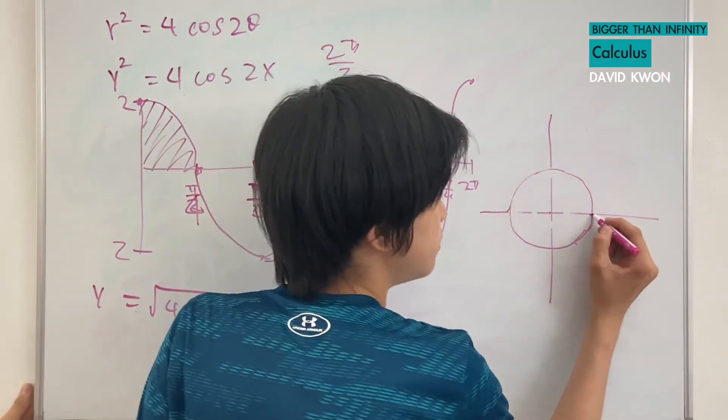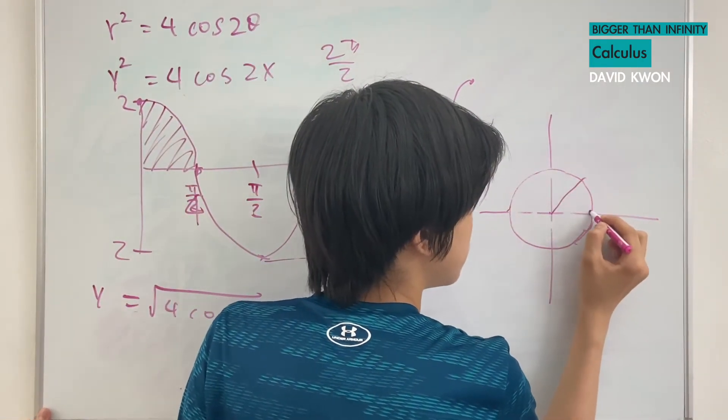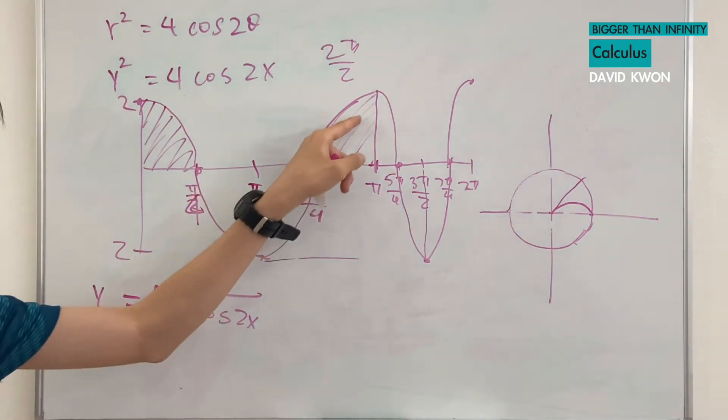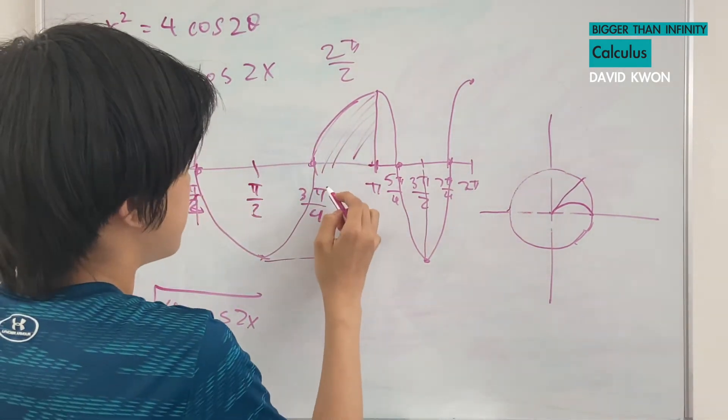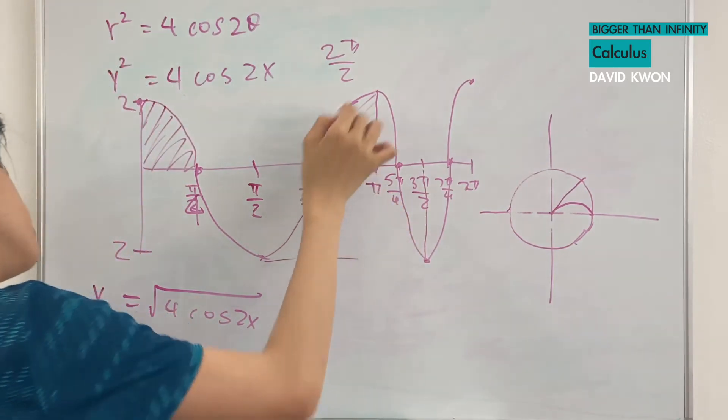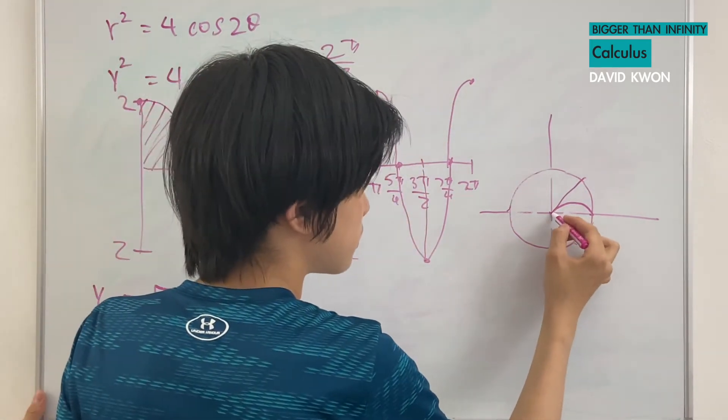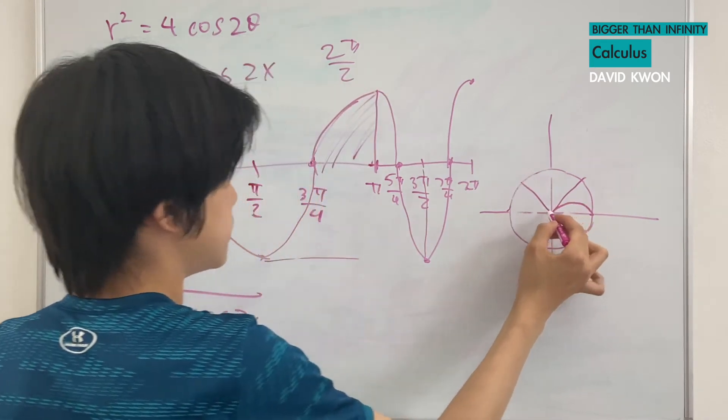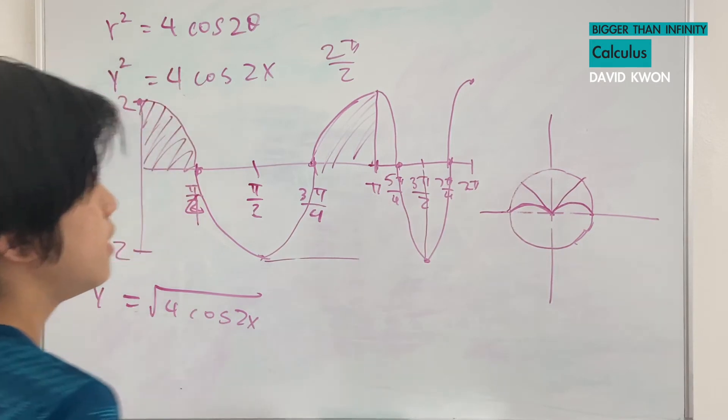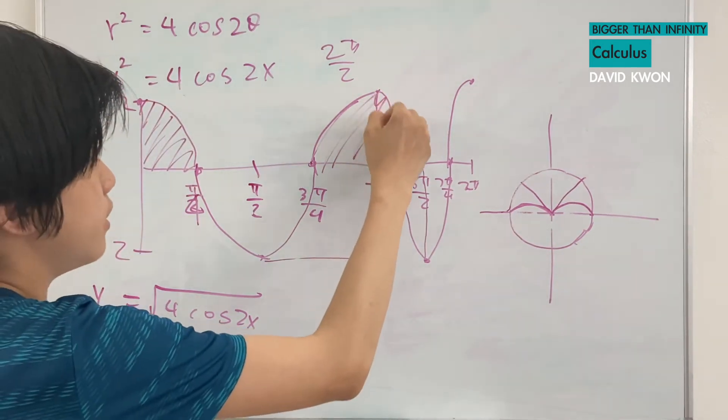So, 2 to 0. And we're not counting this part. We're counting this. And it is 3π over 4 to π. That starts from 0. That goes to 2. So, it starts from 0. So, it starts from 0. That goes to 2. Like this.